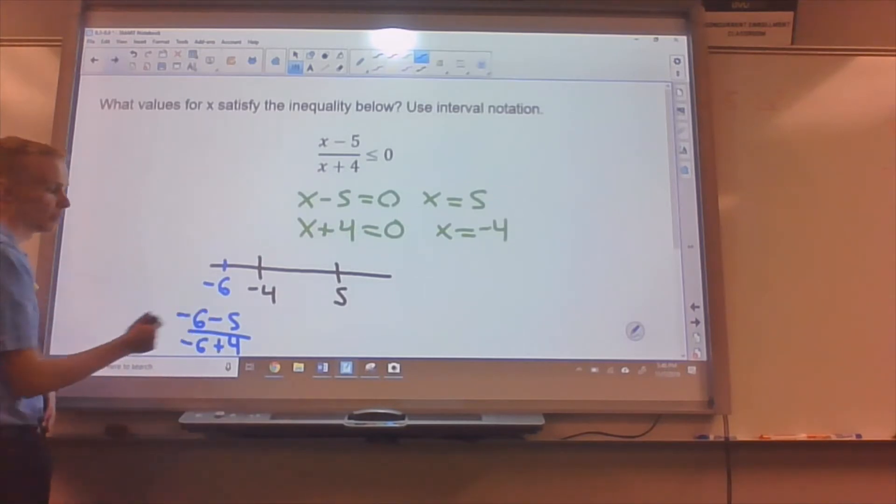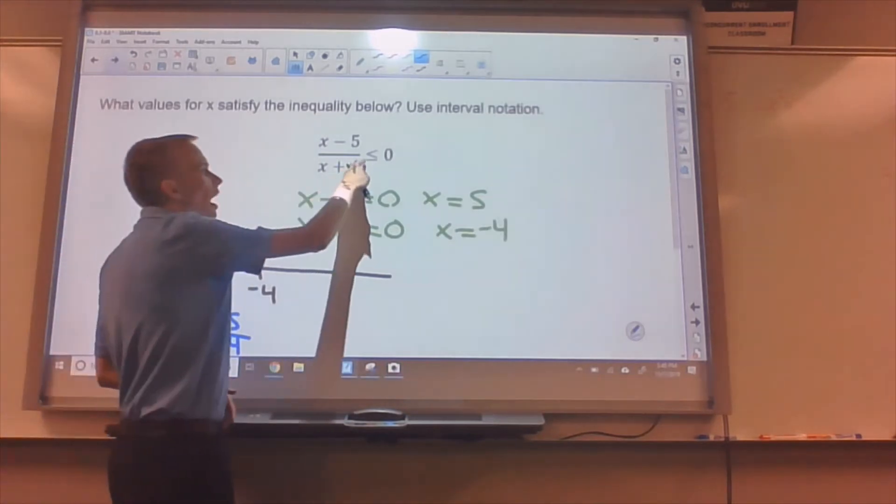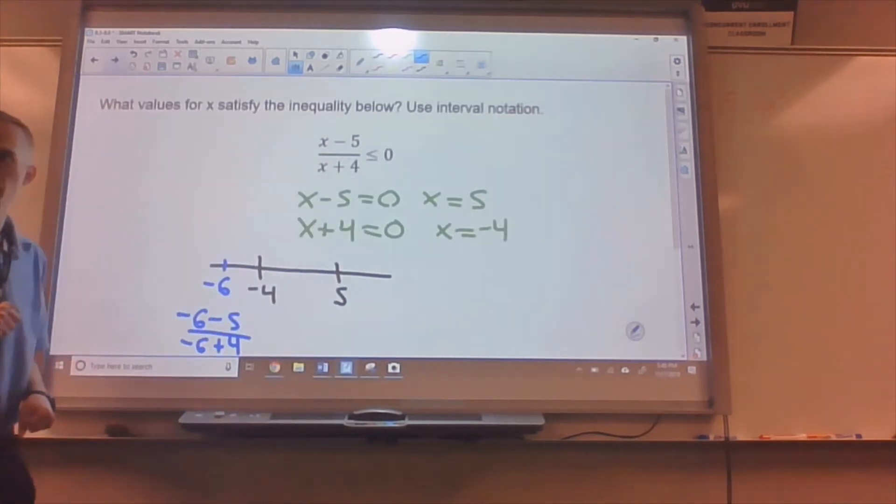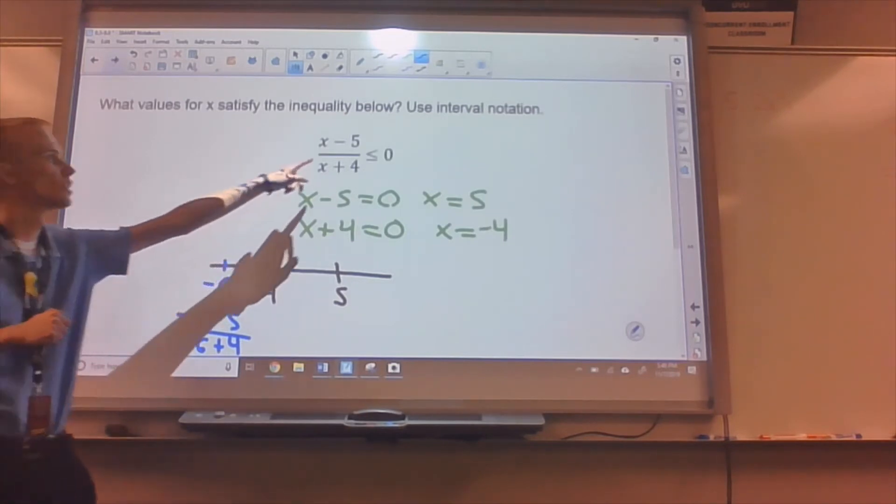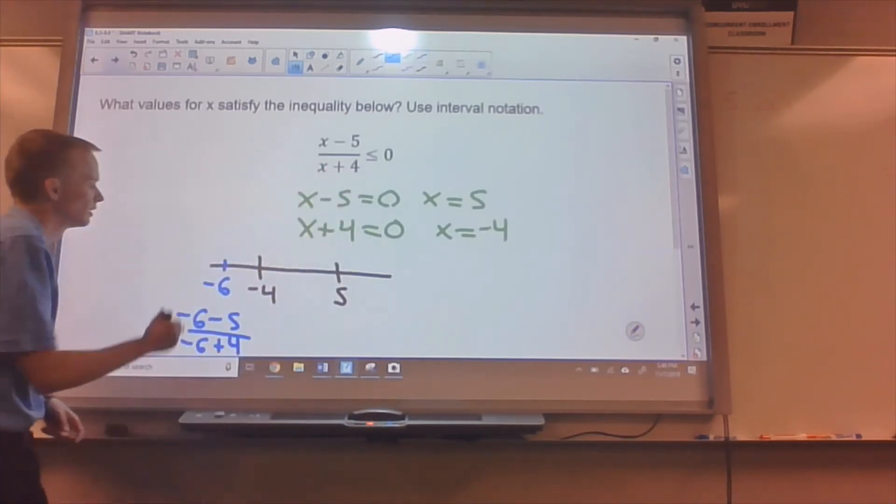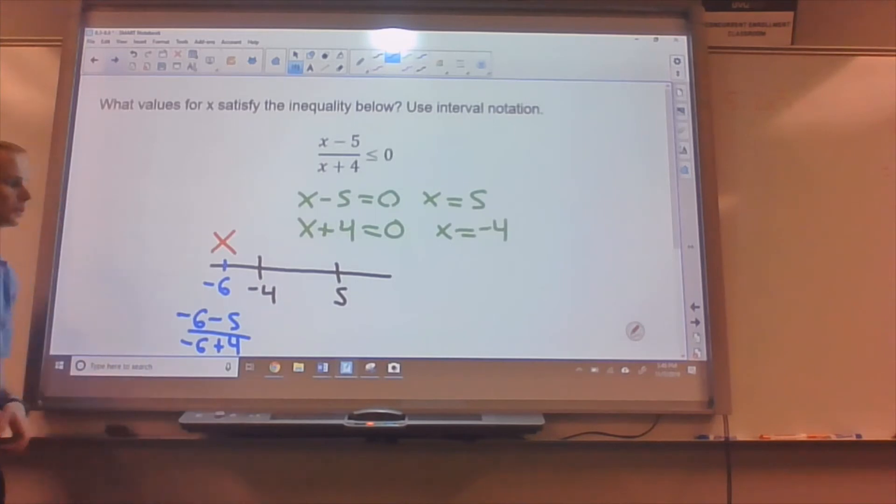Negative six minus five is going to be negative. And negative six plus four, that's going to be negative two. We get a negative over a negative. That'll be positive. But I wanted this less than or equal to zero. And it was positive over here. So that would mean we're not true at negative six.